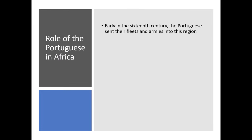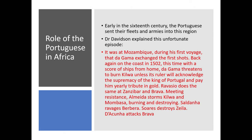Early in the 16th century the Portuguese sent their fleets and armies into this region. Dr. Basil Davidson explained this unfortunate episode: Da Gama exchanged the first shots at Mozambique on his first voyage. Back in 1502 with a score of ships, he threatened to burn Kilwa unless its ruler acknowledged the supremacy of the king of Portugal and paid yearly tribute in gold. Almeida stormed Kilwa and Mombasa, burning and destroying. Saldana ravaged Berbera, Suarez destroyed Zayla, and Dakuna attacked Brava. By the time we get to the 16th century, a lot of the East African cities were up in smoke.